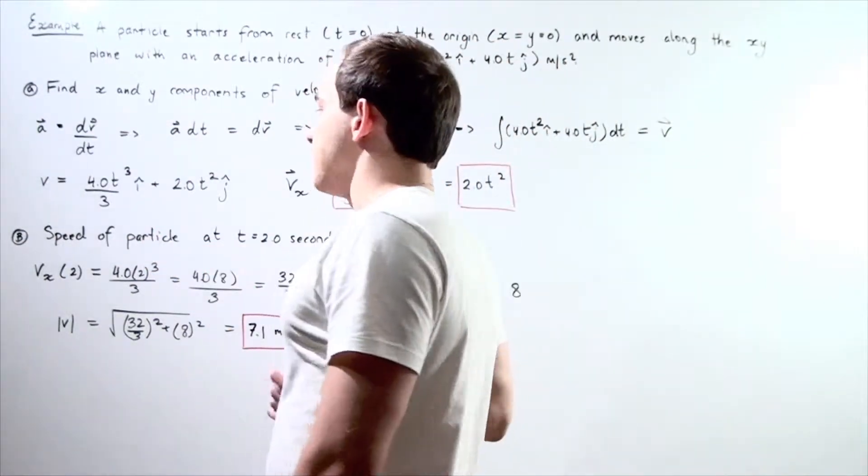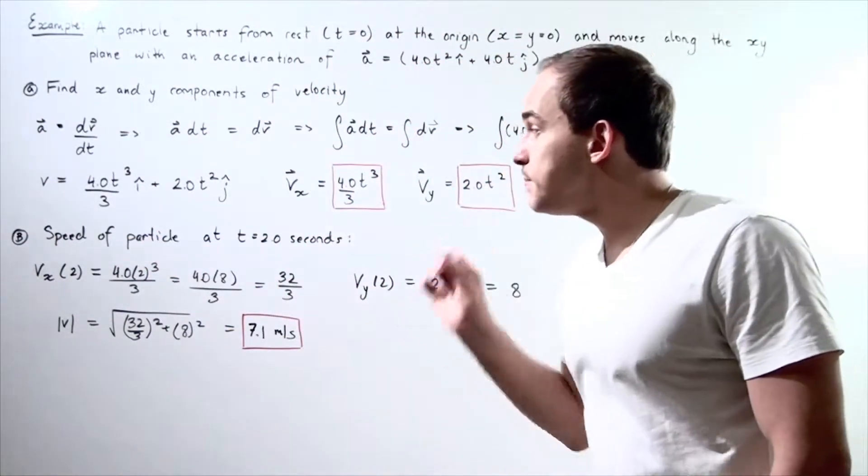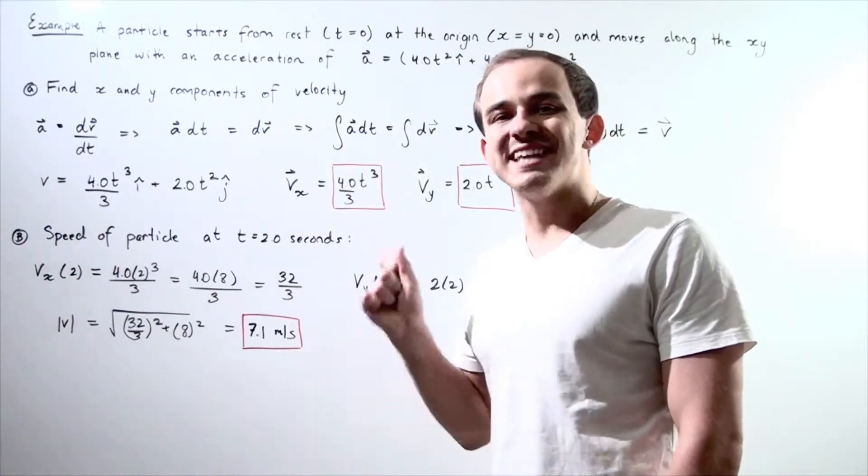Let's go to part b. Now, we want to find the speed of the particle at time 2 seconds.